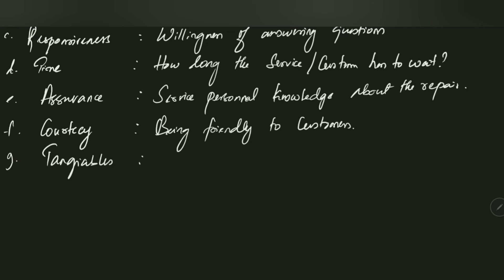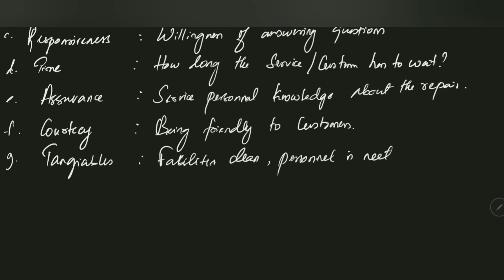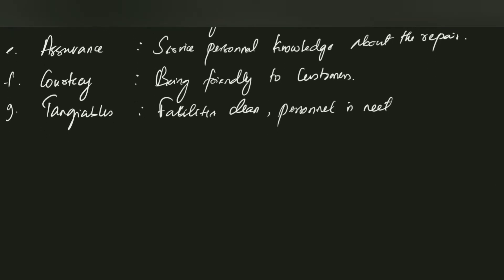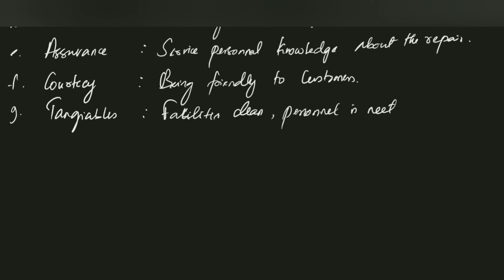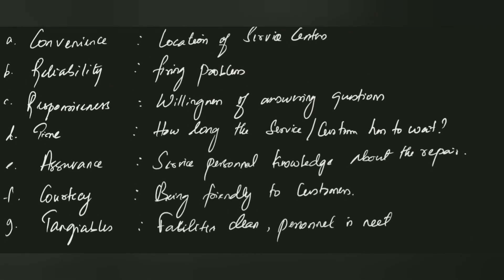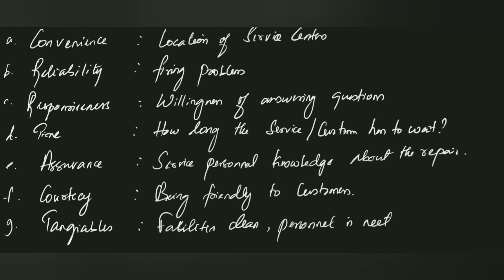The last service attribute is tangibles — referring to how clean the facility is and how neat the service personnel appear. When you visit a service center that looks clean and the person helping you is neat and well-presented, you automatically get a good impression. Maintaining all these attributes is essential for quality in service.